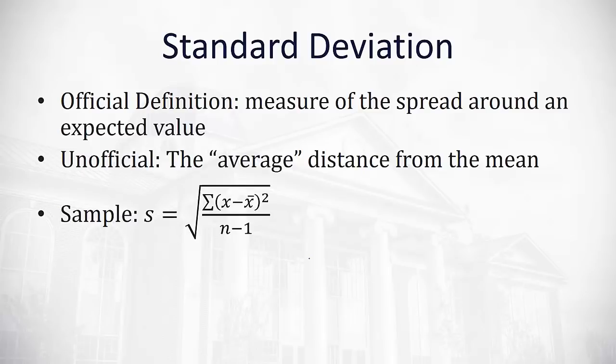And we'll walk through this equation here in just a minute. If it's a population, however, we use the lowercase Greek letter sigma to represent the standard deviation. And this alters the formula slightly. If we're talking about a population, we only divide by n, not n minus 1.